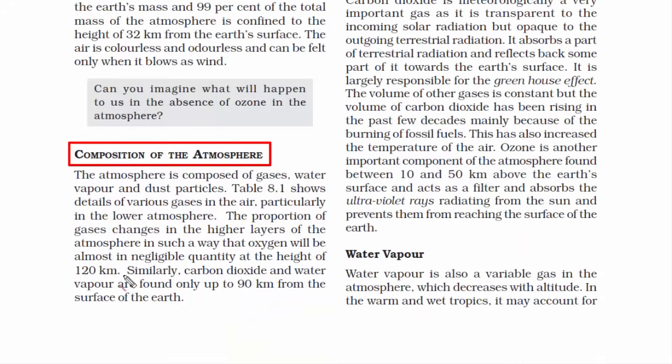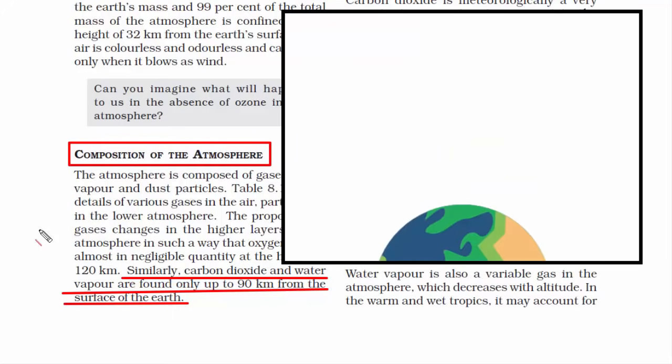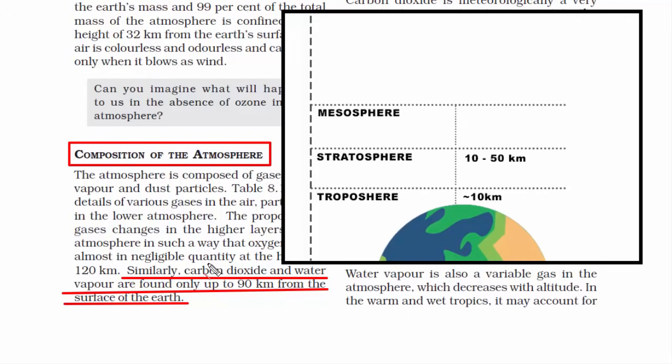Now here it says carbon dioxide and water vapor are found only up to 90 km from the surface of the earth. Let me just pull up the 5 different layers of the atmosphere. Here's the pic and you can see the first layer which is closest to the earth's surface is troposphere which exists up to 10 km from the surface of the earth. After that we have stratosphere, then mesosphere, after that thermosphere and finally exosphere.